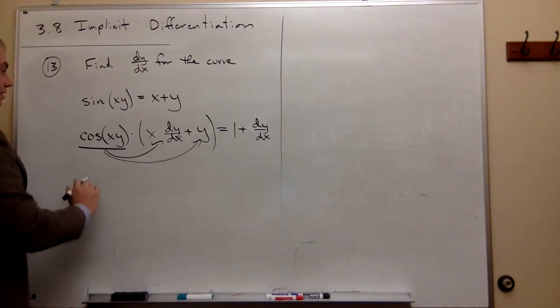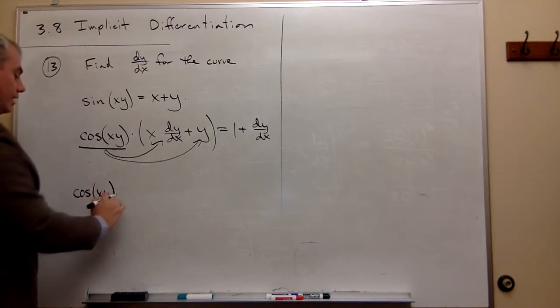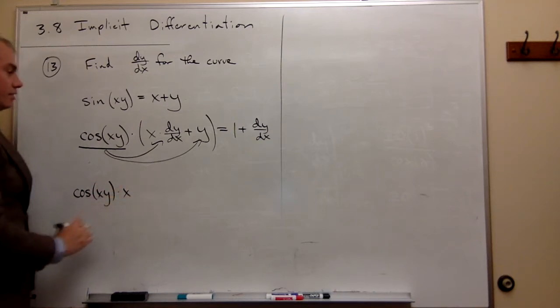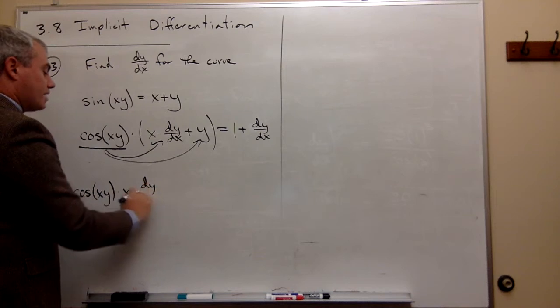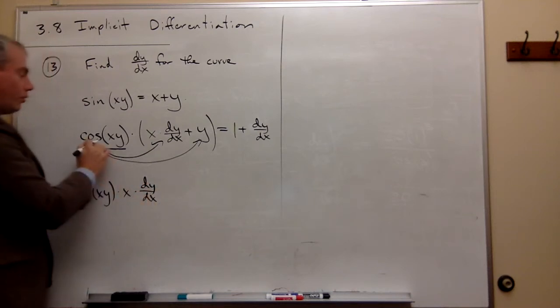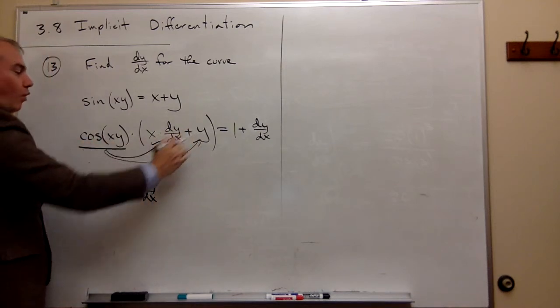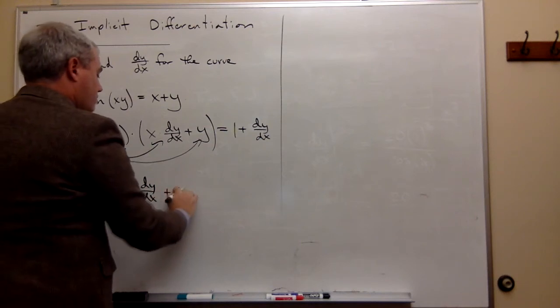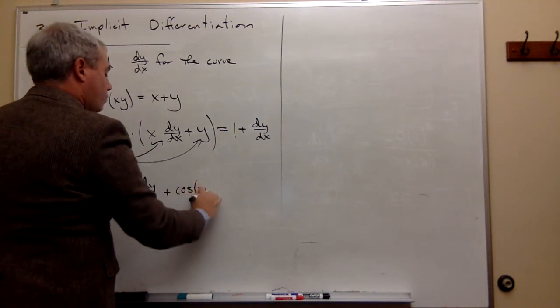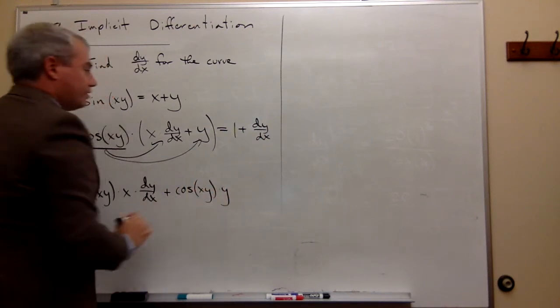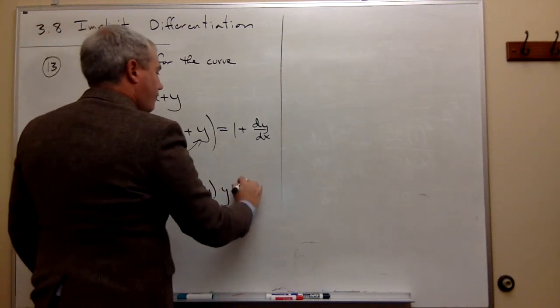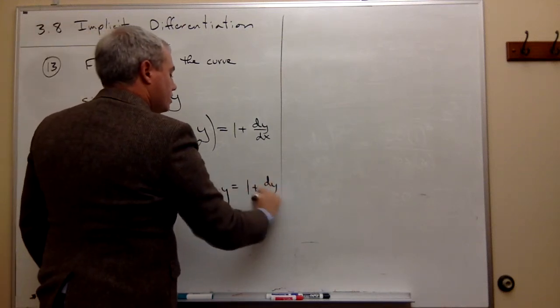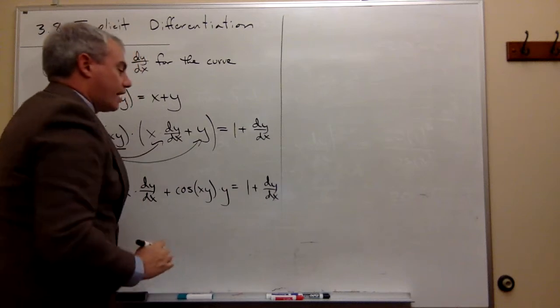So let's multiply it through first. If I do, I get cos(xy) times x times dy/dx. Then I'll multiply the cos(xy) by y, so I get plus cos(xy) times y, and on the other side, I have 1 plus dy/dx.